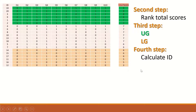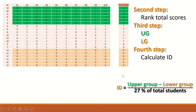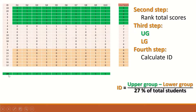With 20 students, 27% of 20 is nearly equal to 6. So we select the 6 students with the highest scores for the upper group and 6 students with the lowest scores for the lower group. As shown in the rows for the upper group, these are the first 6 students who scored highly.